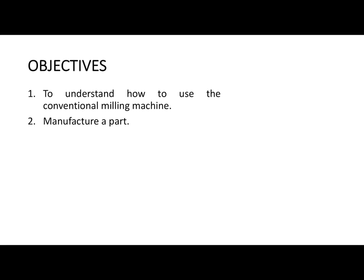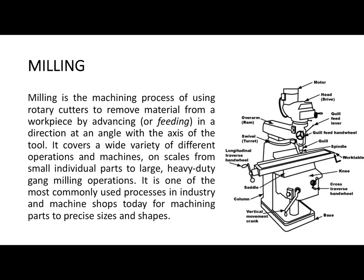Just like how we did in the first experiment. Let's look at what milling is. Milling is the machining process of using rotary cutters to remove materials from a workpiece by advancing in a direction at an angle with the axis of the tool. Basically, if you have a workpiece, you can change its shape to any desired shape by forcing a piece of metal which is stronger than the workpiece material to cut through it and obtain the desired shape.